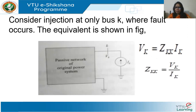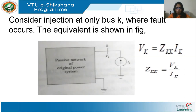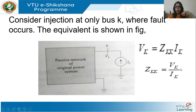What I'm achieving is: when I have a current injection only at bus K and the rest of the network is replaced by the passive network, the ratio of V_K to I_K is the Thevenin's impedance. By definition of Thevenin's impedance from circuit theory, Z_KK = V_K / I_K is the Thevenin's impedance. Therefore, the diagonal element of the Z-bus matrix is the Thevenin's impedance at that particular bus.